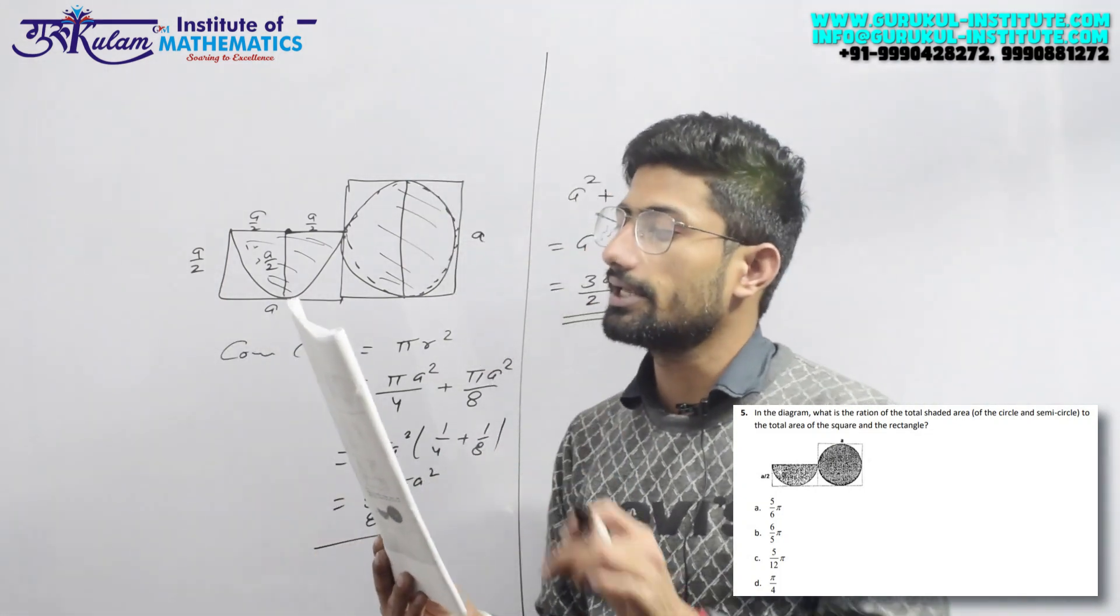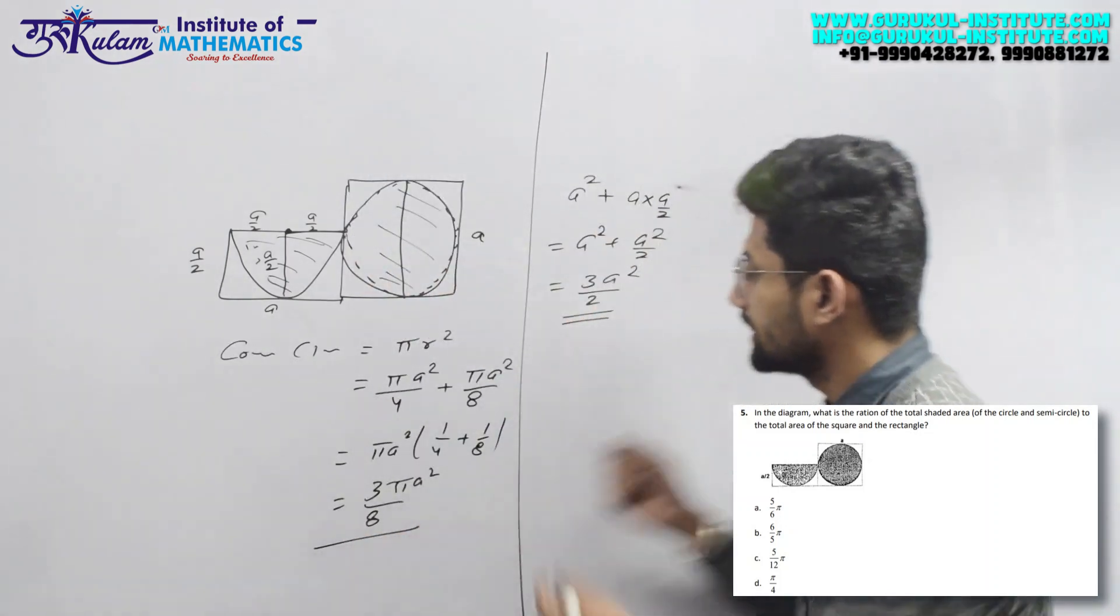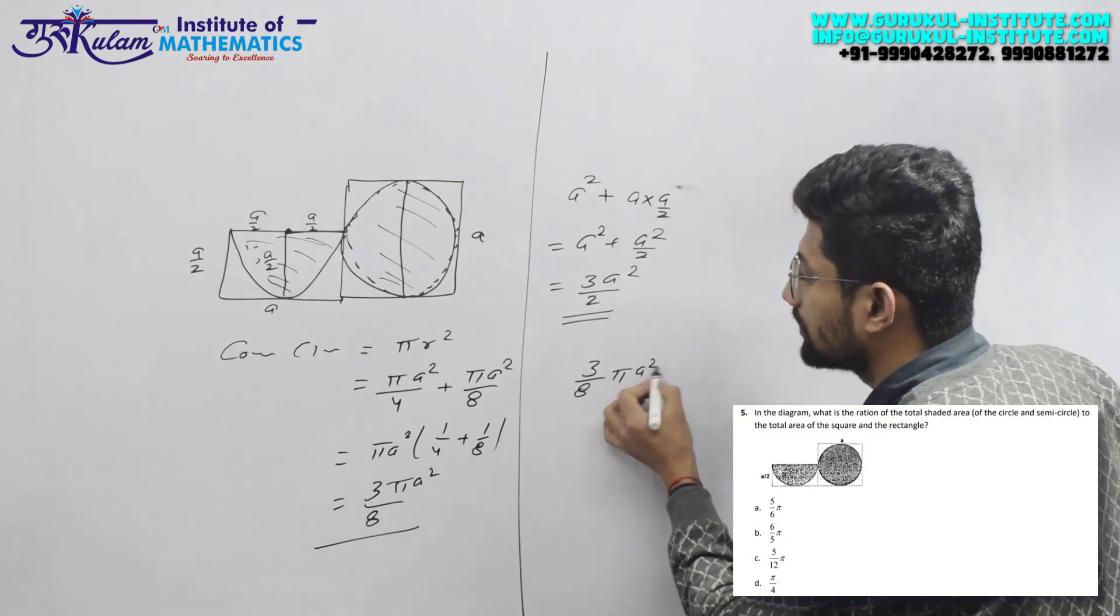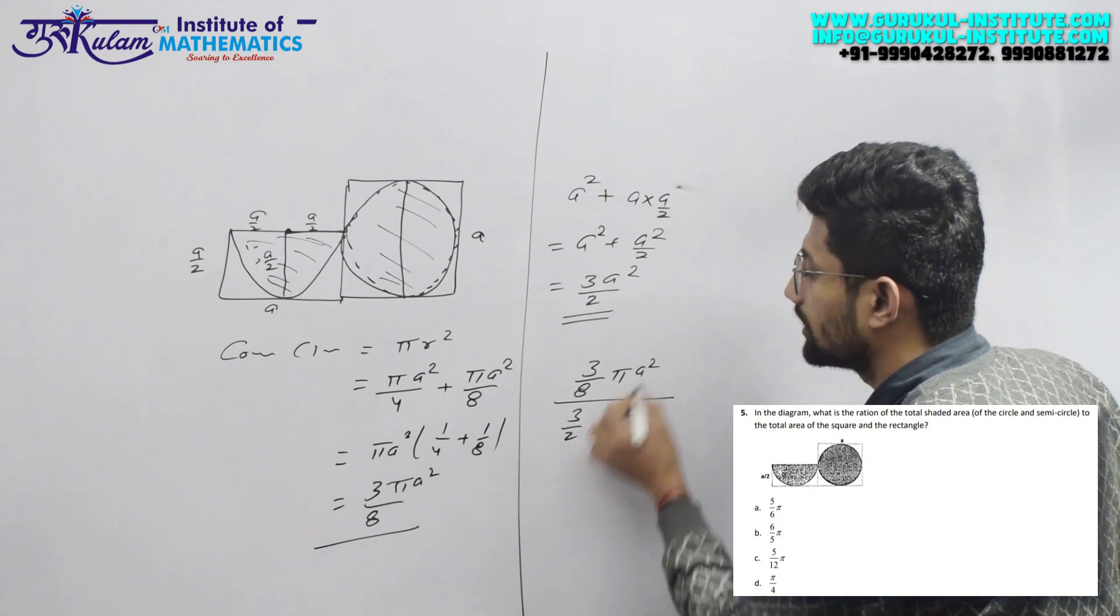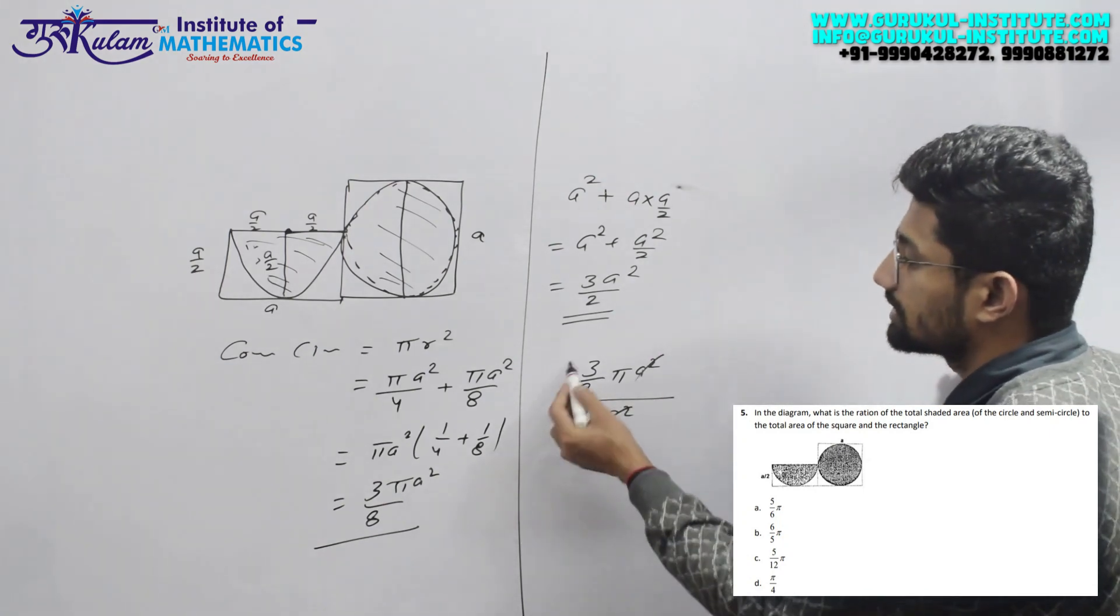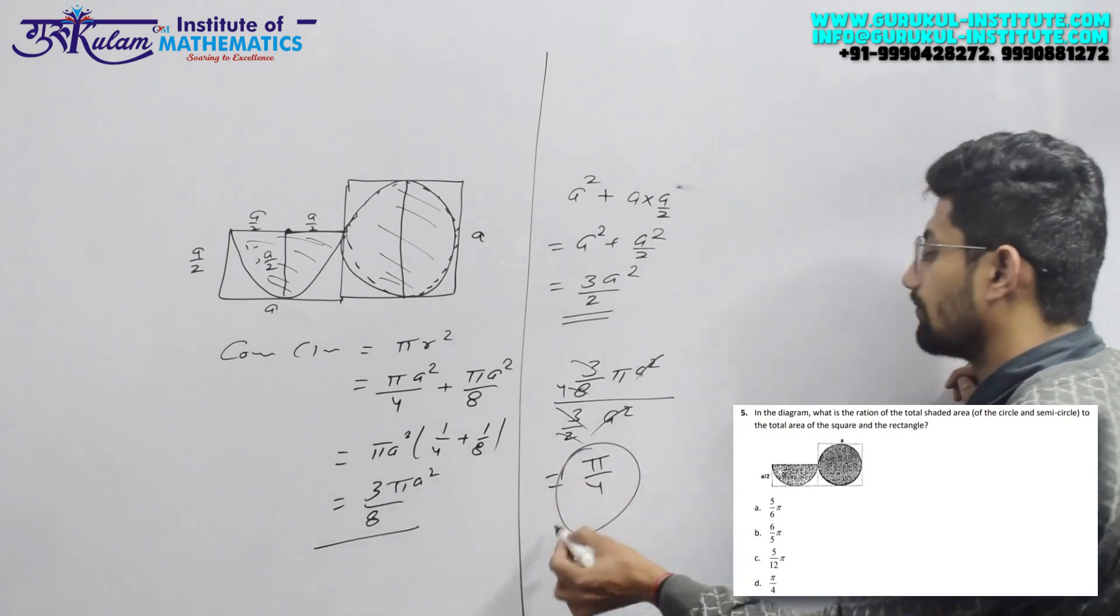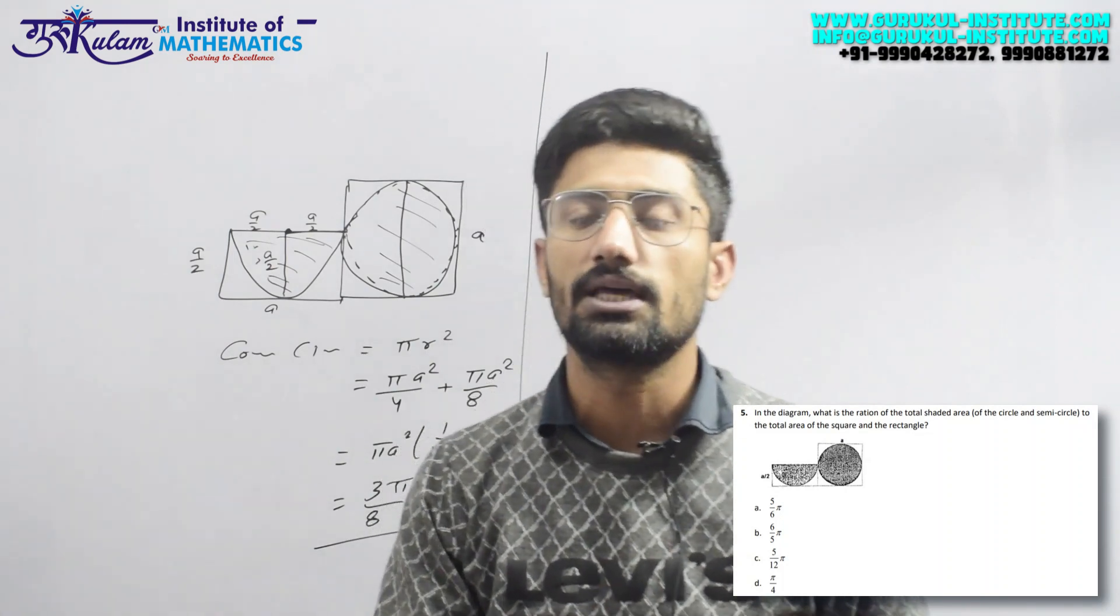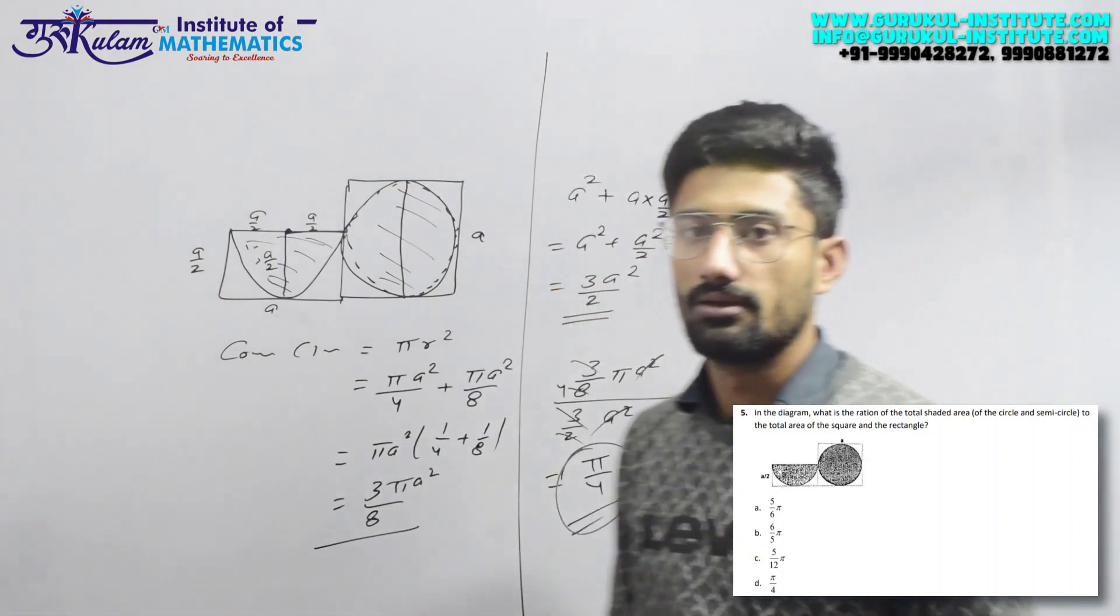अब उसने जो ratio पूछा, वो shaded area का total area के साथ ratio पूछा है, imply that shaded area ऊपर आएगा 3 by 8 π a² divided by 3 by 2 a². a² से a² get cancelled out, 3 से 3 cancel out, 2 से 4 cancel out, imply that answer आगे आपका π by 4. तो जो shaded area है उसका total area के साथ ratio क्या जाएगा, π by 4, section d, okay.